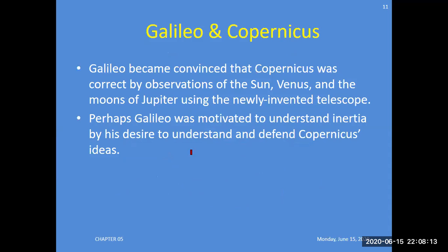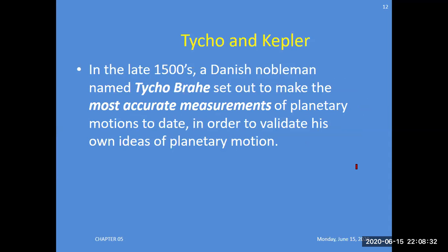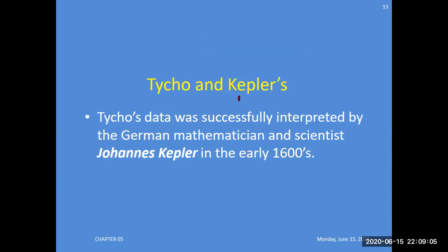Tycho and Kepler: these were the most important scientists who worked in the field of planetary motion. In the late 15th century, a Danish nobleman named Tycho Brahe set out to make the most accurate measurements of planetary motion to date in order to validate his own ideas of planetary motion.